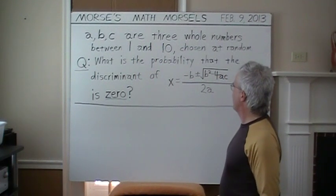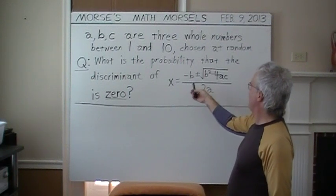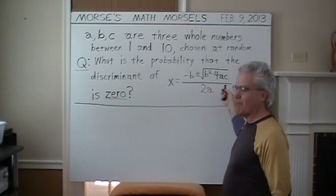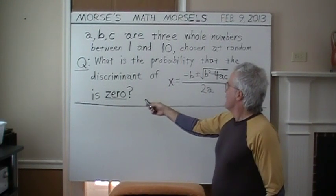what is the probability that the discriminant of X equals negative B plus or minus square root of B squared minus 4AC, all divided by 2A, is zero?